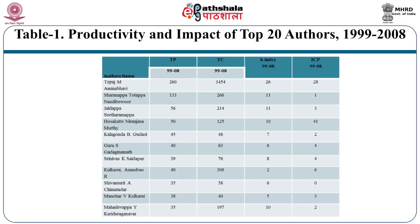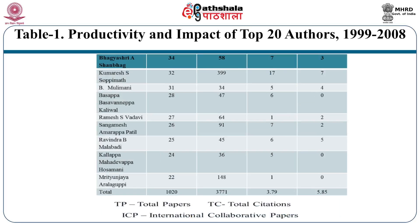Only 4 authors scored an h-index value more than the average value of all authors. These authors are Niranjana Murthy with an h-index value of 41, followed by Amina Bhavi with 28, Sopimath with 7, and Kulkarni with 6.